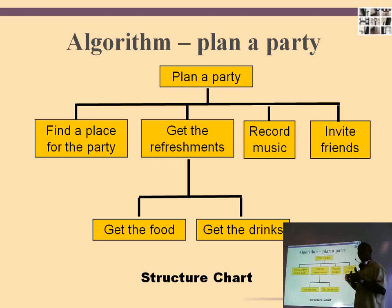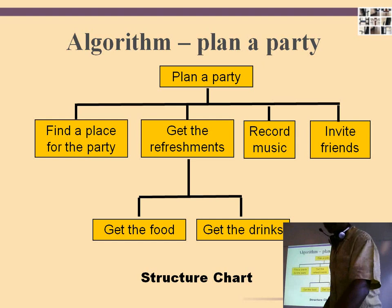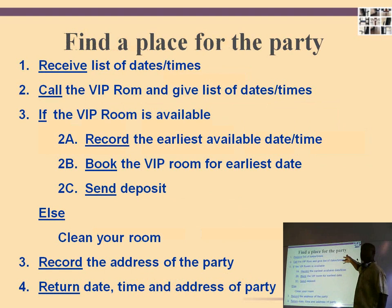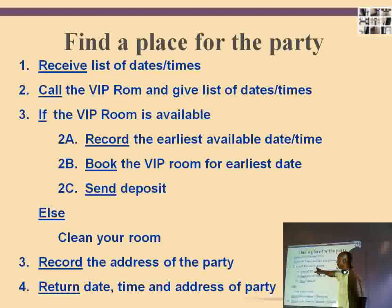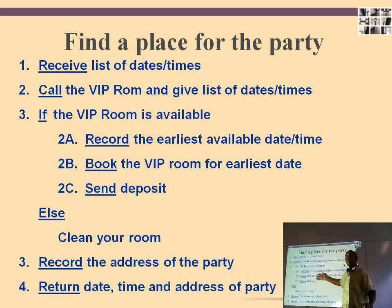Here is the algorithm — the step-by-step approach over a finite amount of time — to solve the problem of finding a place. It flows very much like our previous algorithm, numbered one through four, with a small typo with two threes. Here we have a branch: if the VIP room is available, we take this branch; if not, we take this one. But this particular branch is itself a sequence. So constructs can be combined — here is a branch or selection construct with a sequential block of instructions within it.